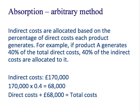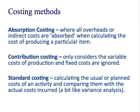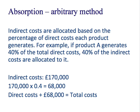Absorption costing has two methods. We're going to allocate all of the indirect costs. There's the arbitrary method and there's the apportion method. With the arbitrary method, indirect costs are allocated based on the percentage of direct costs each product generates. So for example, if product A generates 40% of total direct costs, 40% of indirect costs are allocated to it. So if indirect costs are £170,000, we times that by 0.4 or 40% and we get £68,000. We add that to the direct costs and that should be the total cost for that product.